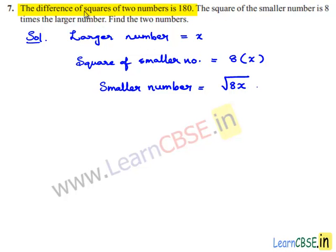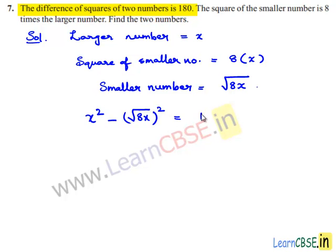According to the first condition, the difference of squares of two numbers is 180. That is, the square of the larger number minus the square of the smaller number is equal to 180. So we can write x² minus 8x is equal to 180.